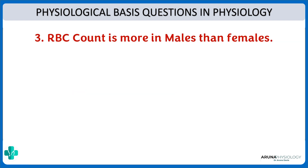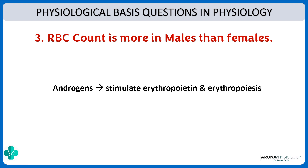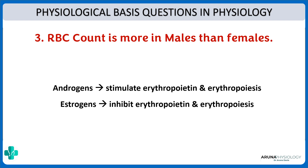Next: why is the RBC count higher in males than in females? A common answer is that females lose blood during their regular menstrual cycle, but there is a more physiological answer. Males contain androgens, which stimulate erythropoietin and thereby stimulate erythropoiesis, whereas estrogen has the opposite effect — estrogens inhibit erythropoietin and thereby decrease erythropoiesis.